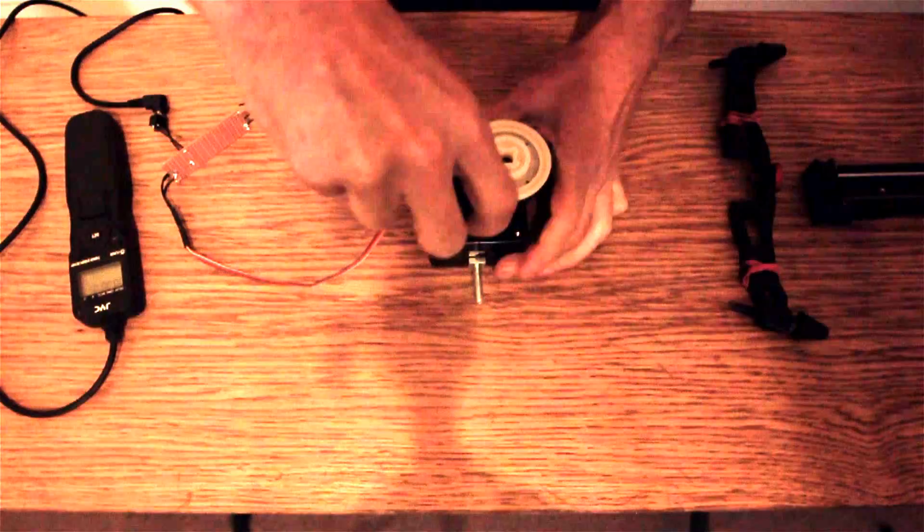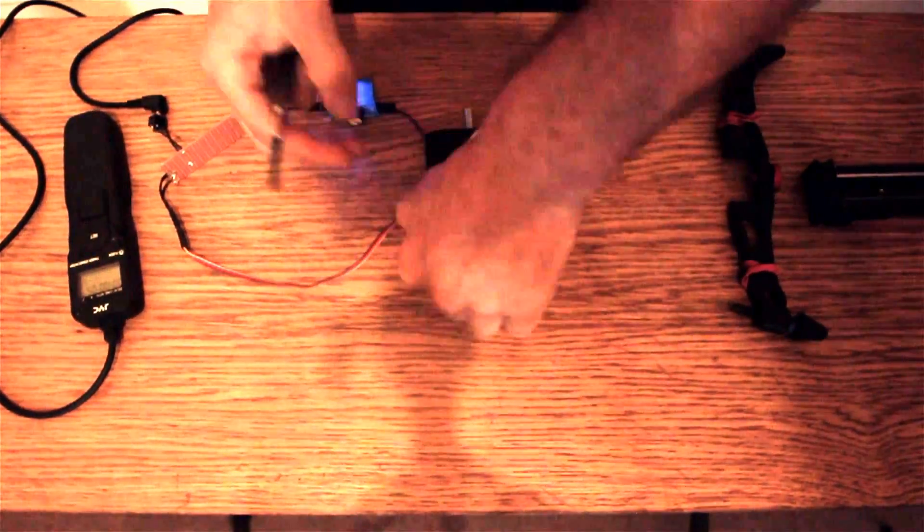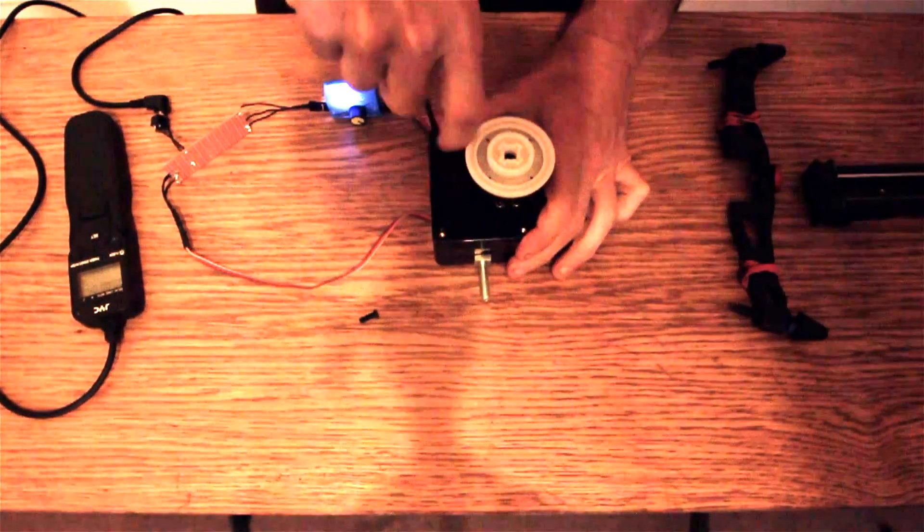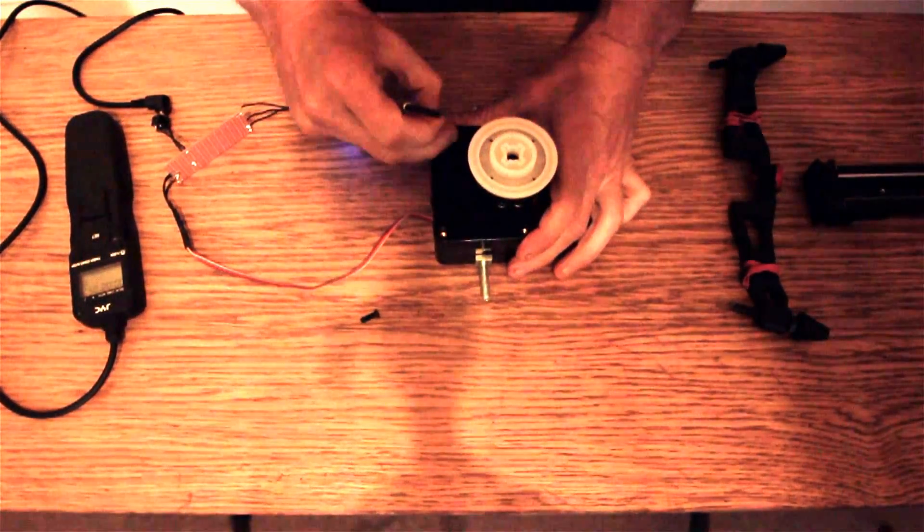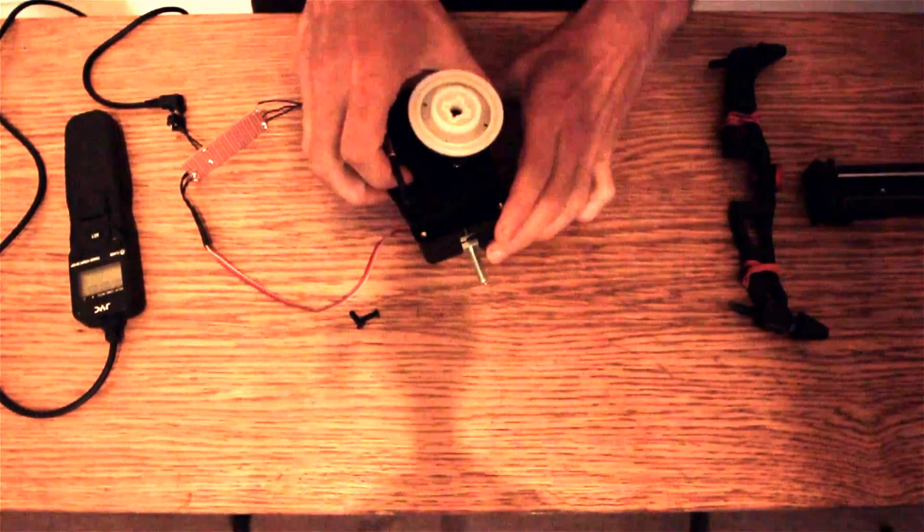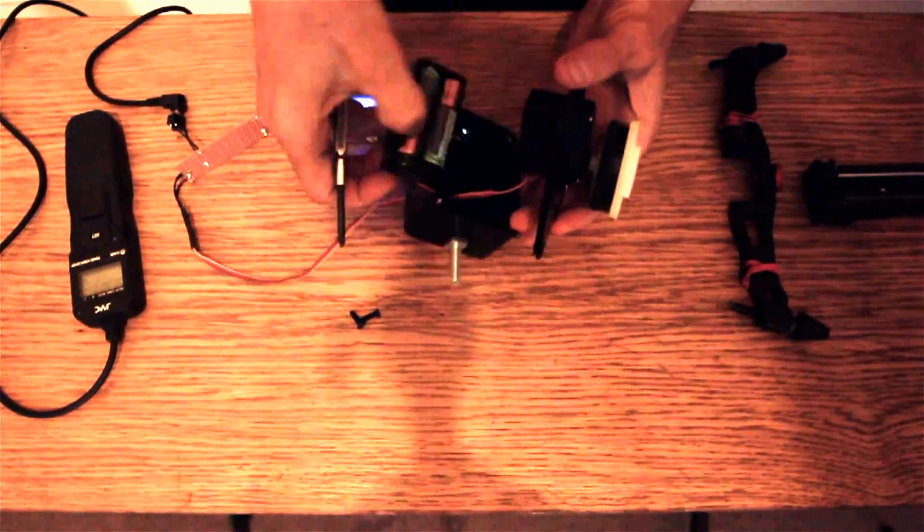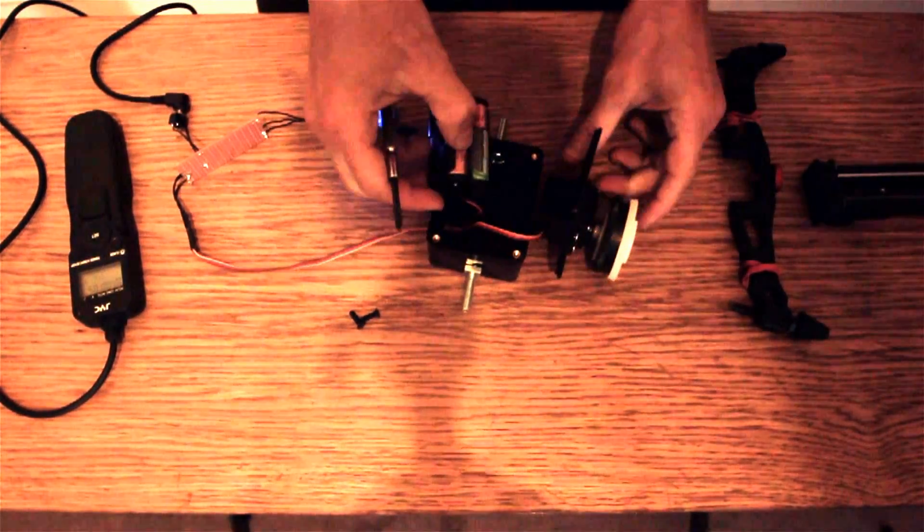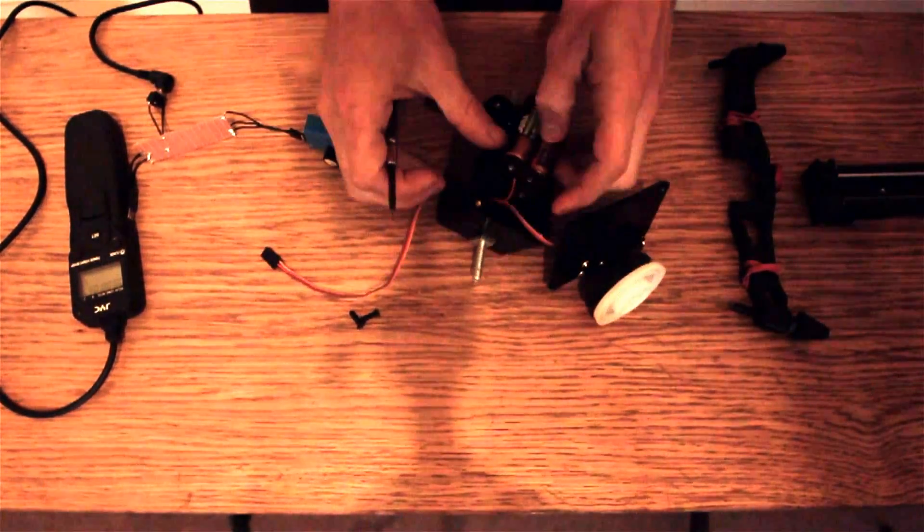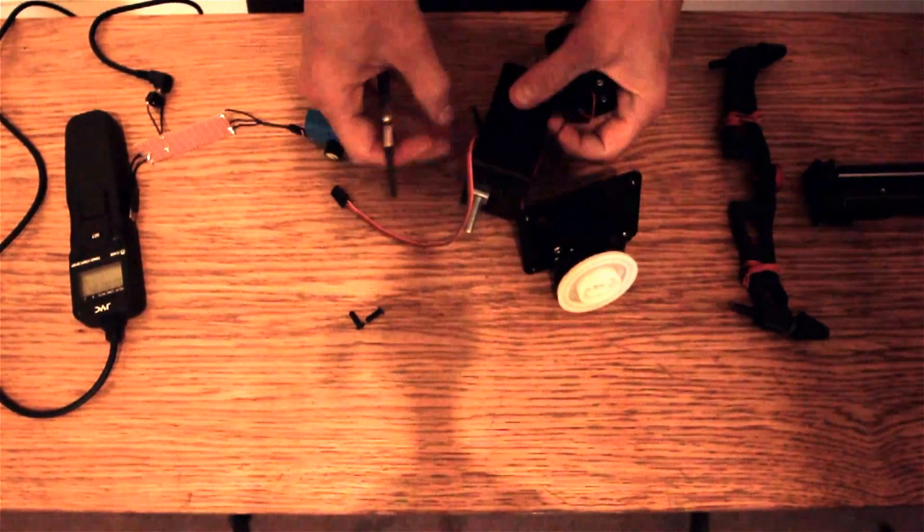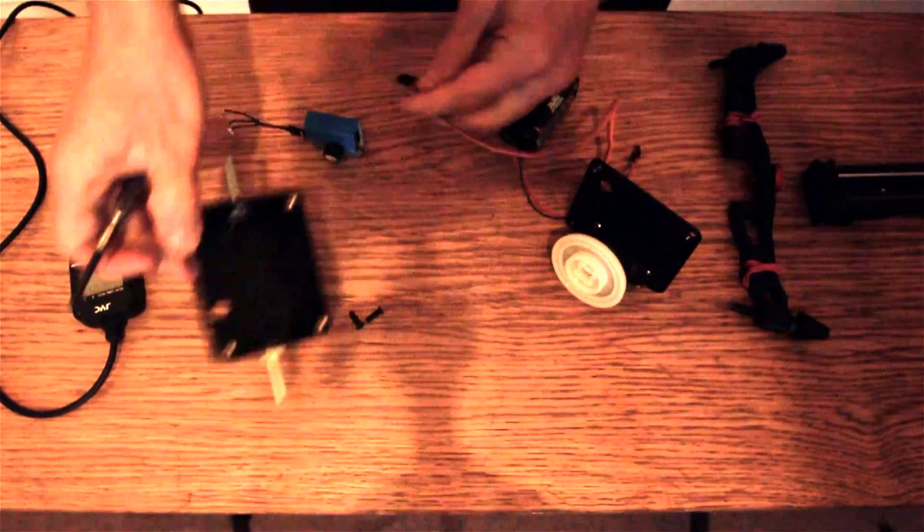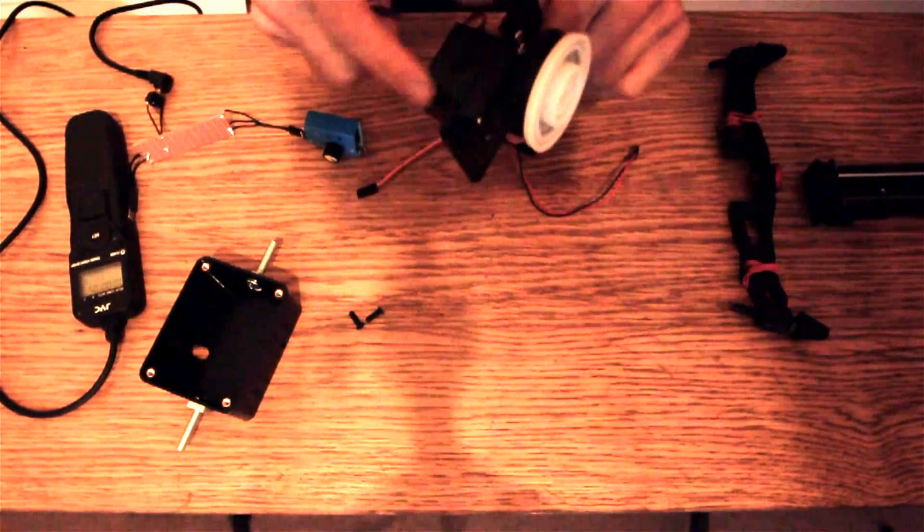So really, there are four components of this. There is the controller, the servo controller. There is the motor, the servo, and then there is the battery pack. Okay, so here we go. Let's just take those off. I'll take it out of the housing. Okay, so this part is the servo.